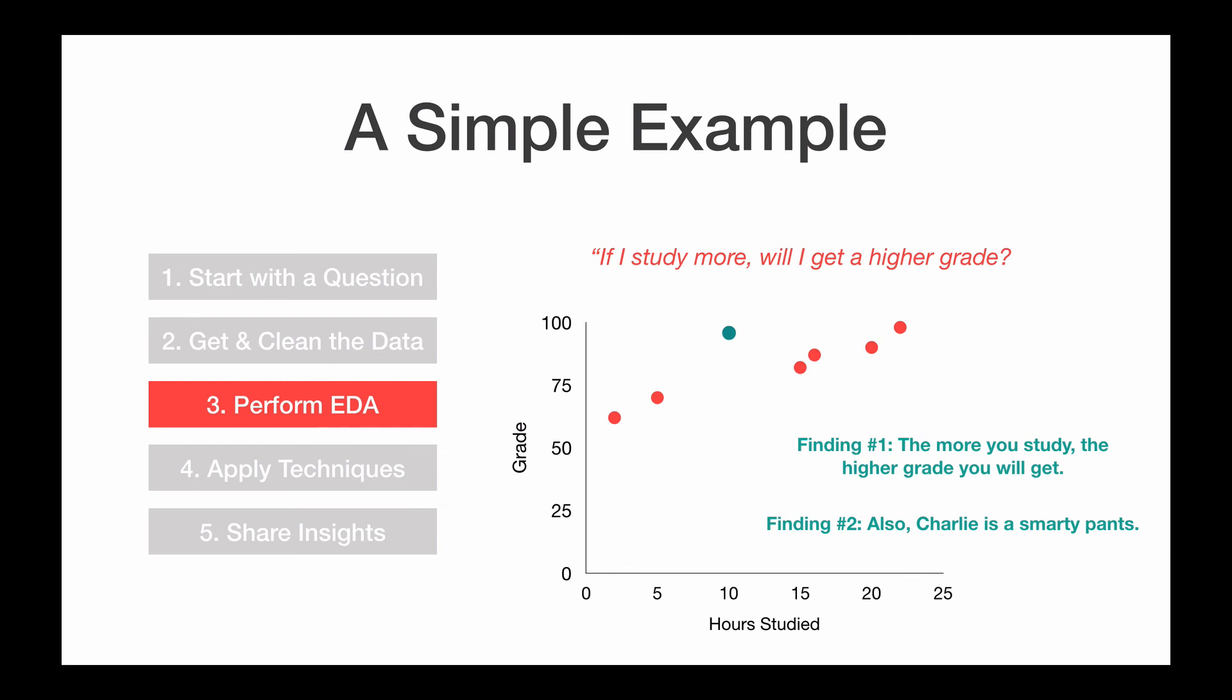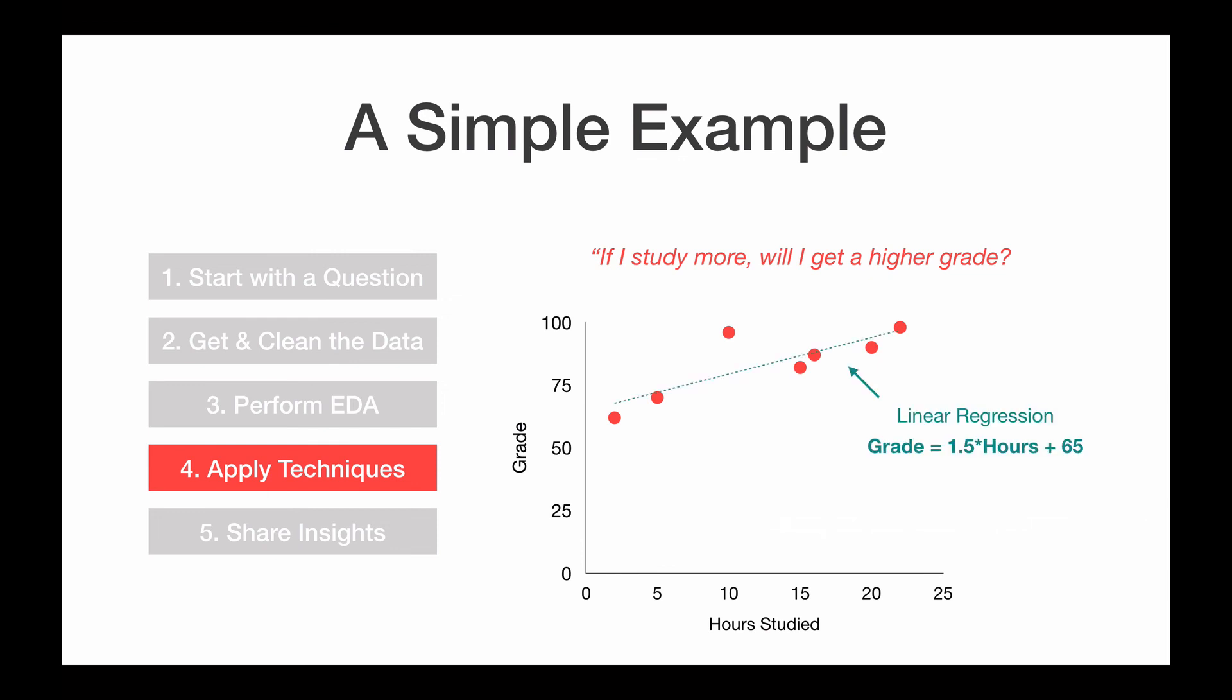Alright, so after EDA, the next step is to apply techniques. So what does this mean? Within data science, there are a lot of algorithms you can use. So specifically, I mentioned those three NLP algorithms for today. But in this case, one technique I could apply is called linear regression. So I can create this line, which gives me this formula to calculate grade, telling me that the grade is equal to this math equation that contains hours studied.